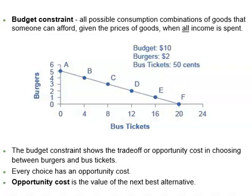Alternatively, if I spend all my money on bus tickets, I can afford 20 bus tickets per week — you take the $10 budget divided by $0.50 per bus ticket and you get 20 bus tickets per week. However, I will not be able to afford any burgers. Point F on the graph shows this alternative choice of 20 bus tickets and 0 burgers. If we connect all the points between A and F, we get my budget constraint. This indicates all the combinations of burgers and bus tickets I can afford given the prices of the two goods and my budget amount.